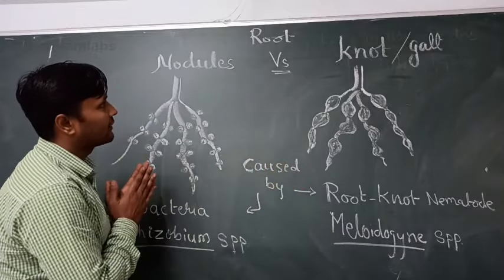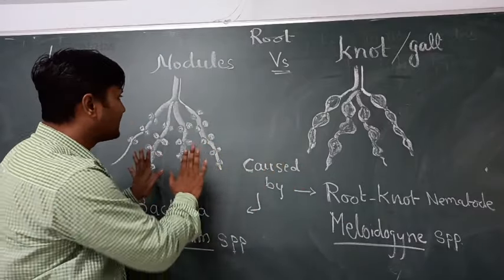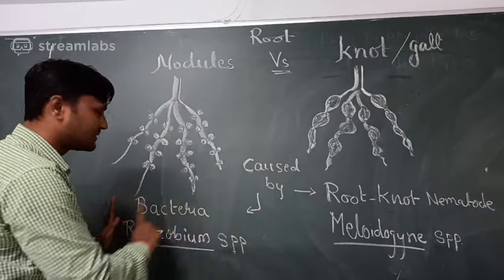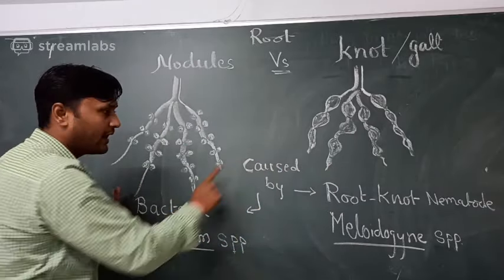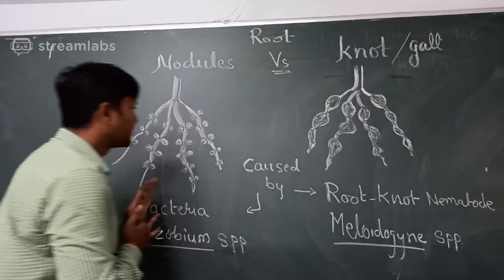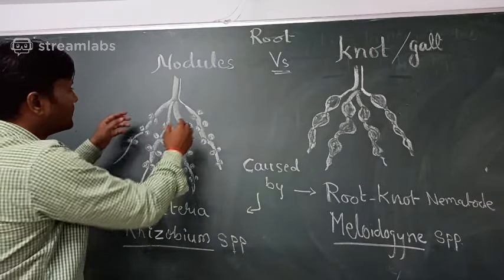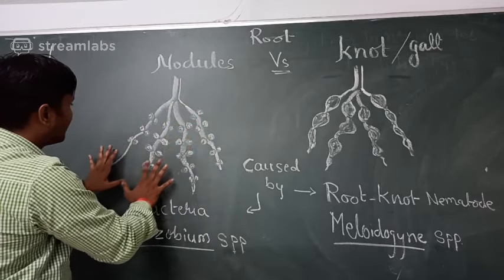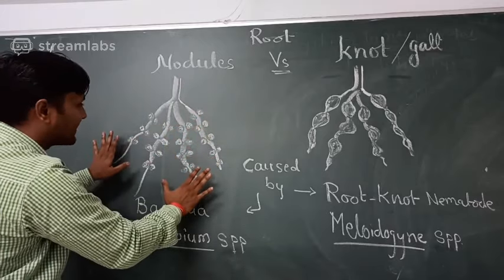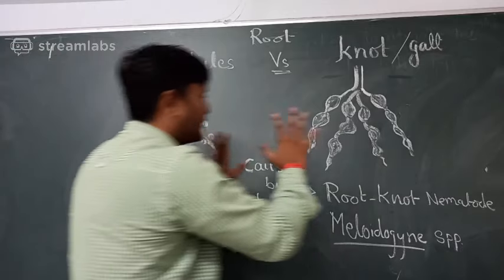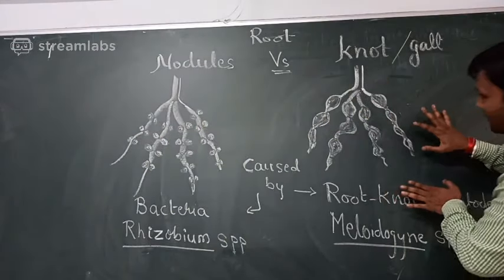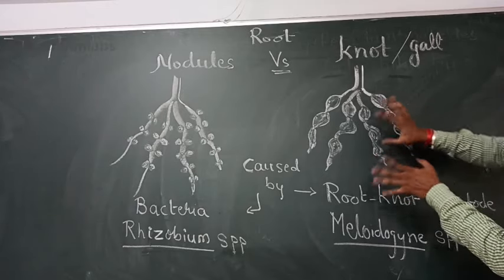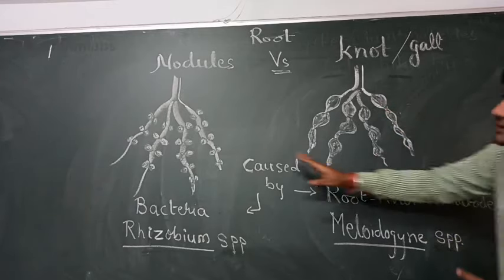Now we are talking about the difference between nodules and galls. The first difference is it is caused by bacteria versus nematodes. Second thing, when you see the nodules, they are homogeneous in shape and size. In case of root knot nematode galls, it is heterogeneous. You can see different types of galls.